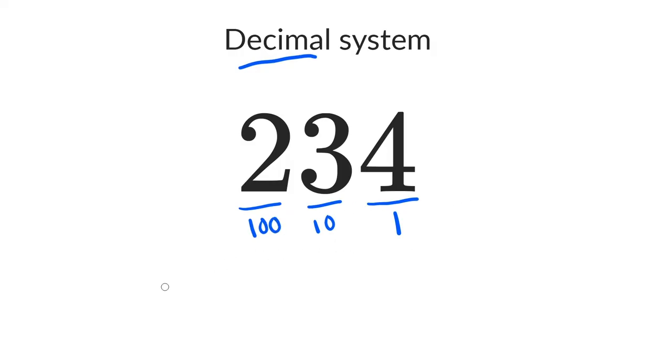That makes this number equal to 2 times 100 plus 3 times 10 plus 4 times 1, all equal 234.